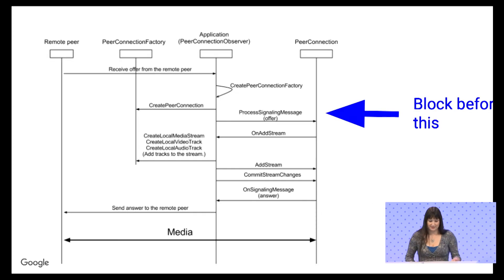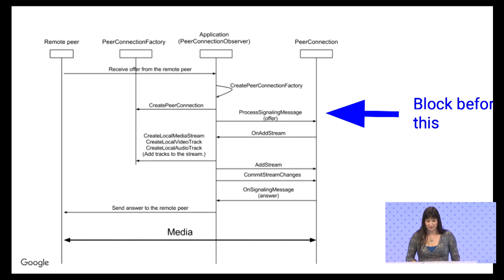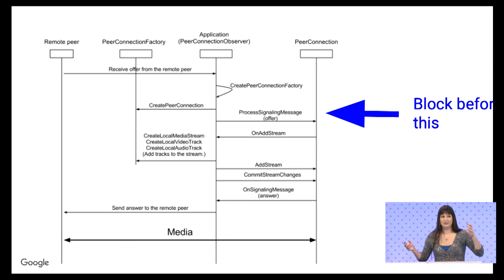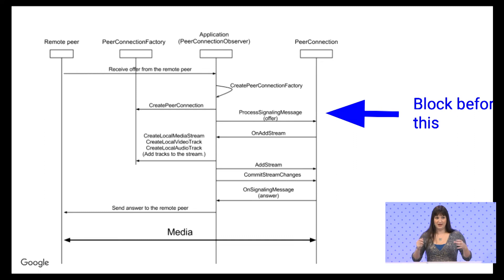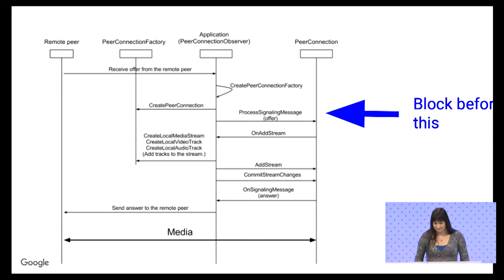This is the state diagram of an incoming call on WebRTC. The best place to put your call block is before you process the answer or before you process the offer. This means the connection won't be set up until the person answers, reducing the risk of processing RTP before the person picks up the call.